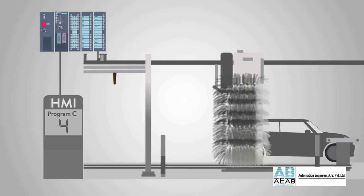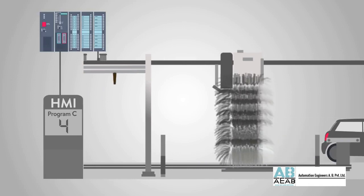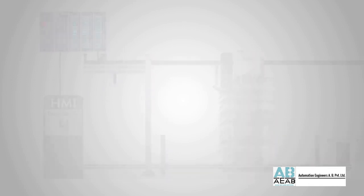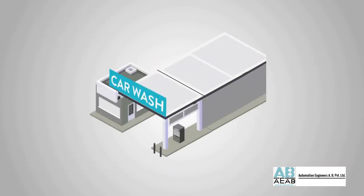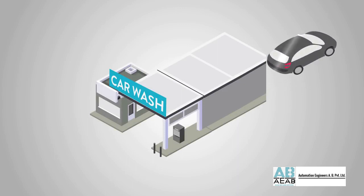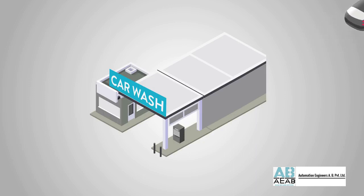Once all steps have been completed, the driver will be signaled to pull out of the wash. Essentially, the only human intervention in the process is the driver selecting what type of wash they want. Industrial automation works exactly the same way.